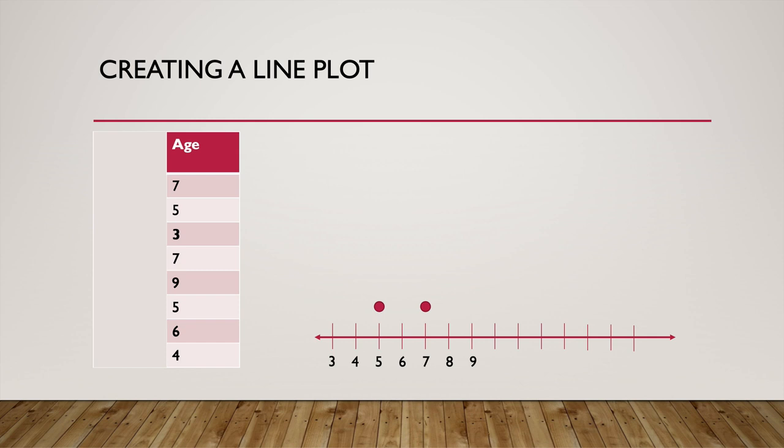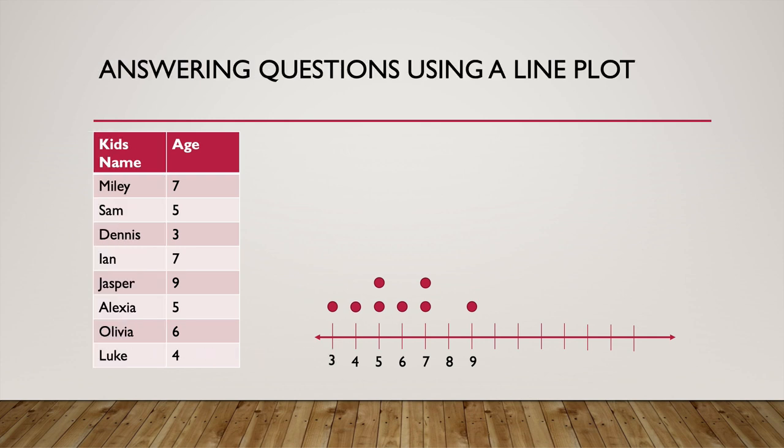So let's do the next one, three. We want that to be a dot. And there we go. And we can do the rest. And now we have all the data we need on our line plot. So this is a line plot. You have successfully entered all the data from your table, which was the kid's name and their age onto the line plot.